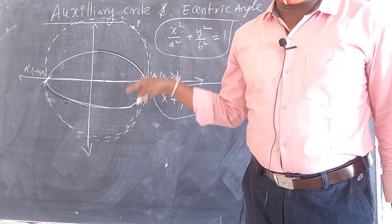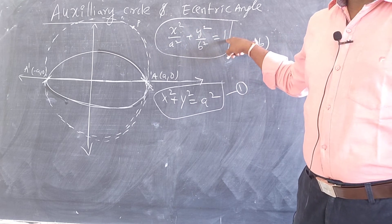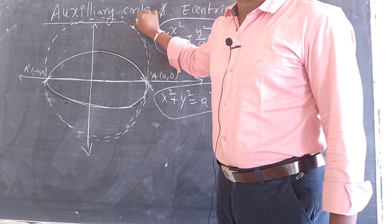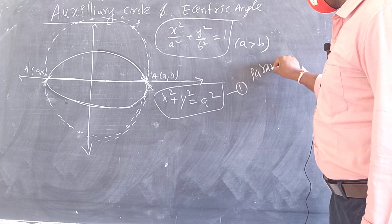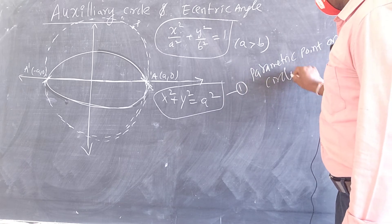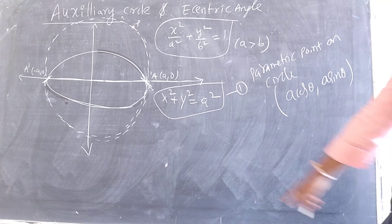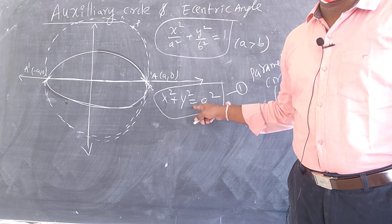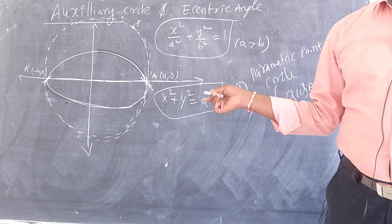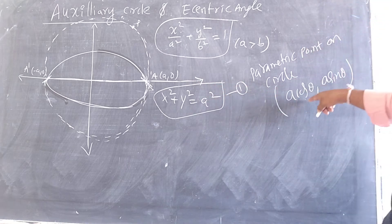The equation of the auxiliary circle is x² + y² = a², and the ellipse is x²/a² + y²/b² = 1. Any parametric point on the auxiliary circle will be (a cosθ, a sinθ). If you substitute x = a cosθ and y = a sinθ into x² + y², you get a²cos²θ + a²sin²θ = a², which satisfies the equation. So the parametric point on the circle is (a cosθ, a sinθ).